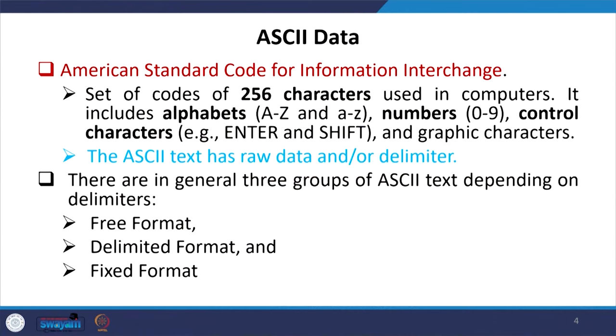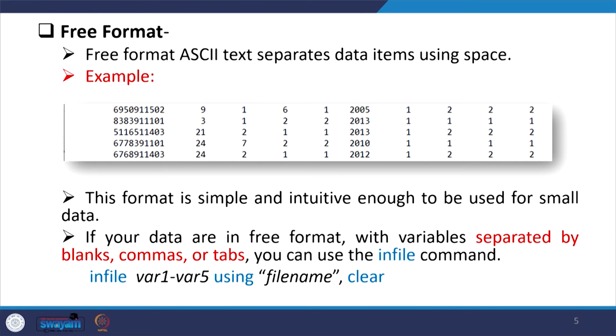So what do we mean by ASCII data? ASCII text data — some clarification: these are basically a kind of American Standard Code for Information Interchange, that is the full form. It has a set of codes, usually 256 characters, saved in computers. This includes alphabets, numbers, control characters like enter, shift, space, and some graphic characters as well. The ASCII text dataset has raw data, also called delimiters. There are in general three groups of ASCII text depending upon delimiters: free format, delimited format, and fixed format.